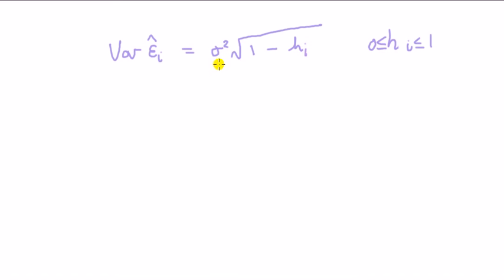And what this is saying then is the variance of the residual will be made up of sigma square. And sigma square is the variance of the true error term, which is different to the residual, times by the square root of 1 minus this leverage point for point I, observation I.